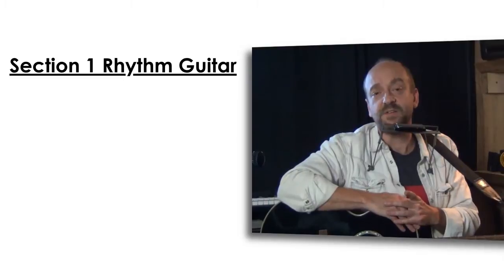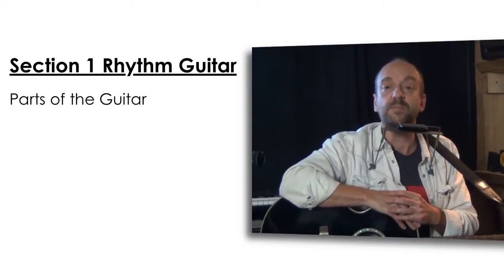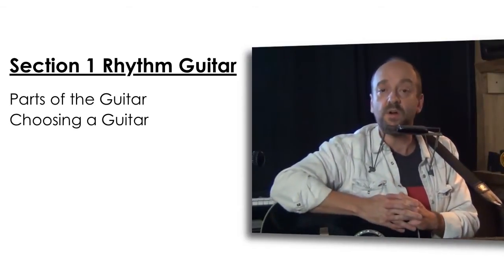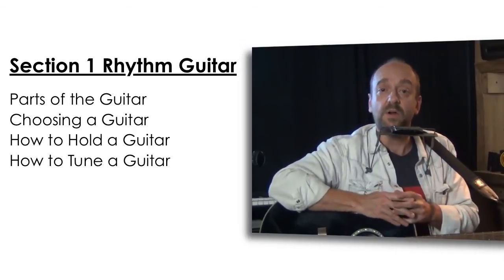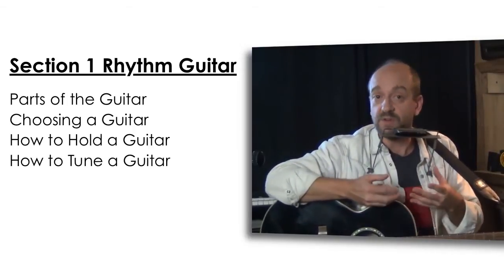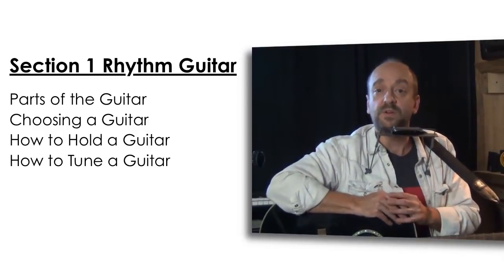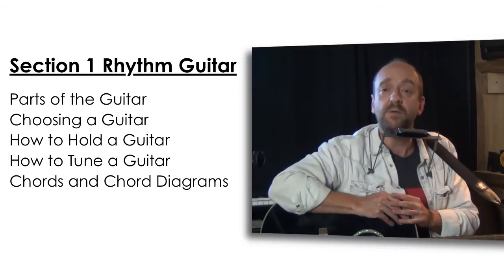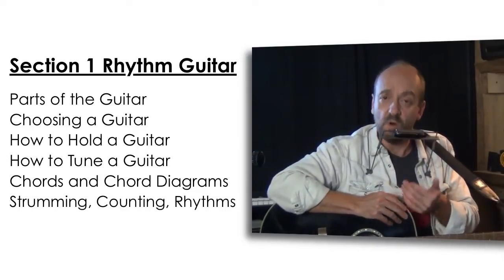The first section of the Guitar and Harmonica Method focuses on rhythm acoustic guitar basics, taking the reader through the various parts of the guitar, what to look for when choosing a guitar, three different ways for holding the guitar, how to tune a guitar using the guitar itself, using a piano, and an electronic tuner. The reader will also learn chords and how to read chord diagrams, followed by strumming, counting, and playing rhythms. The goal of this section is to learn to play solid rhythm acoustic guitar to accompany the harmonica and vocals.